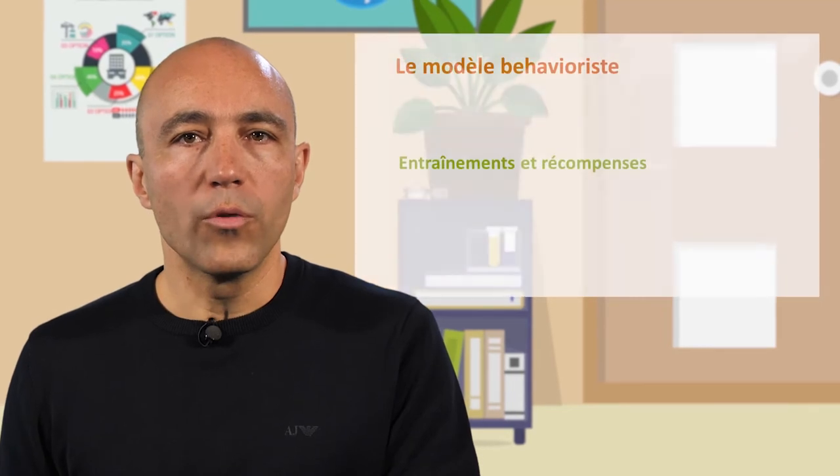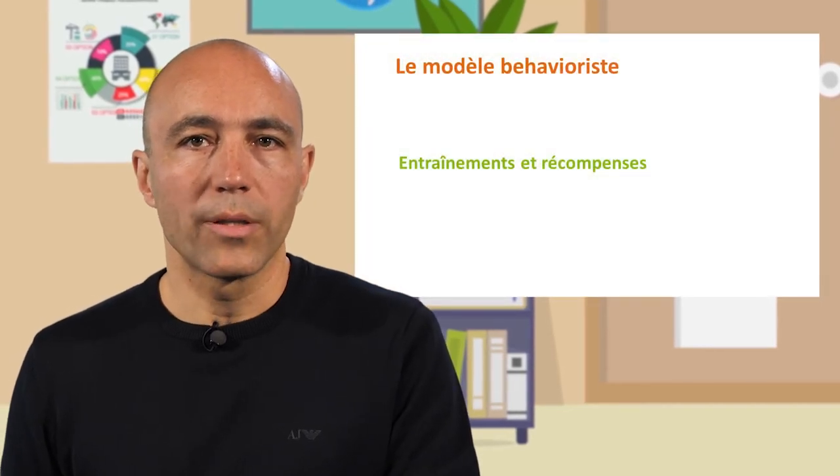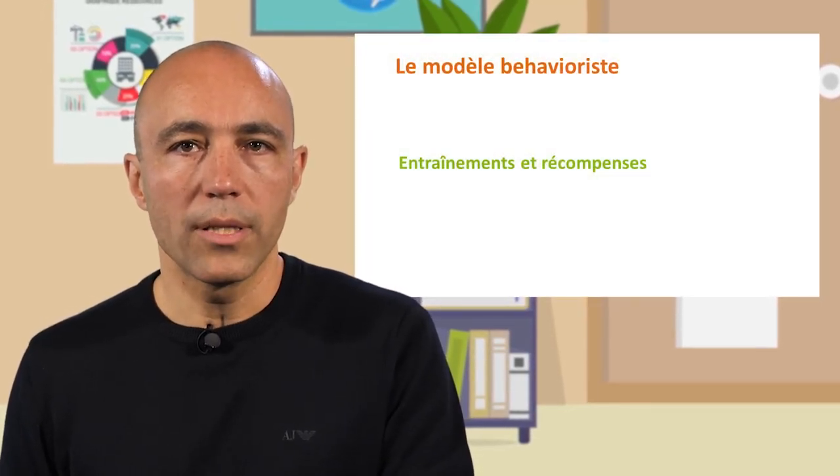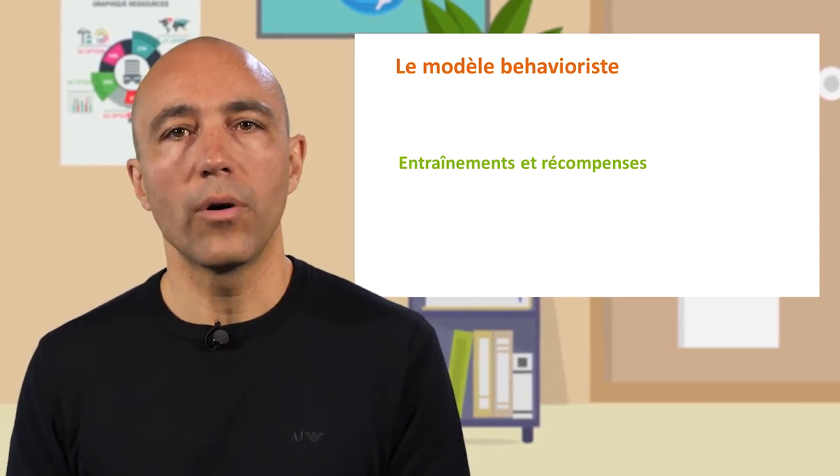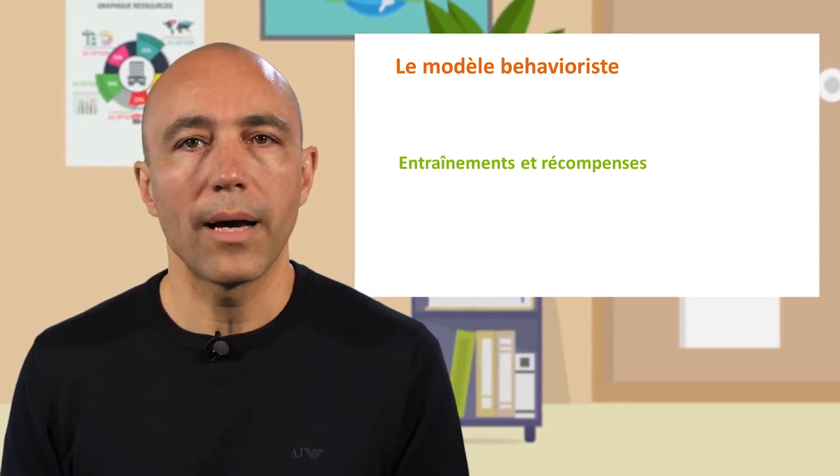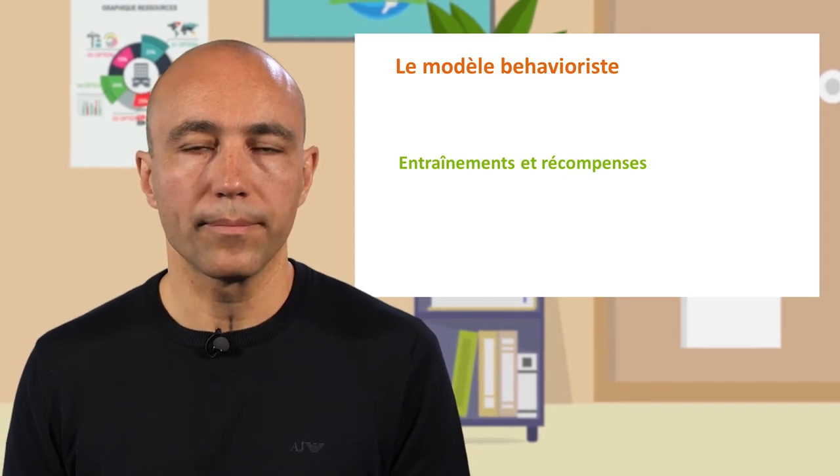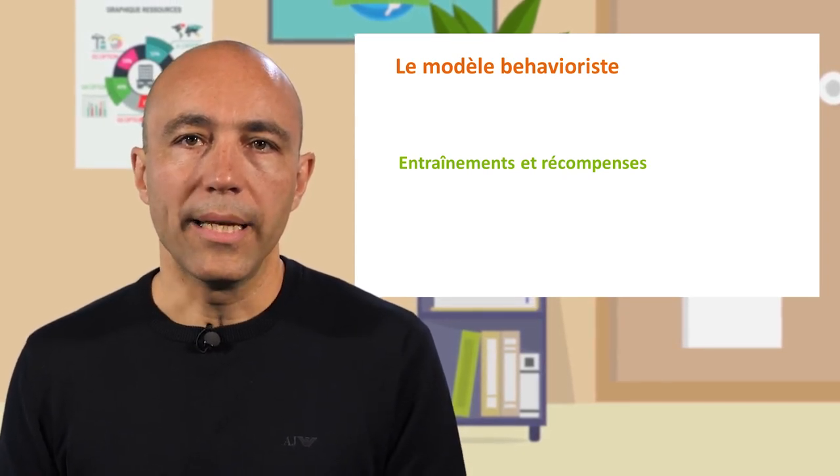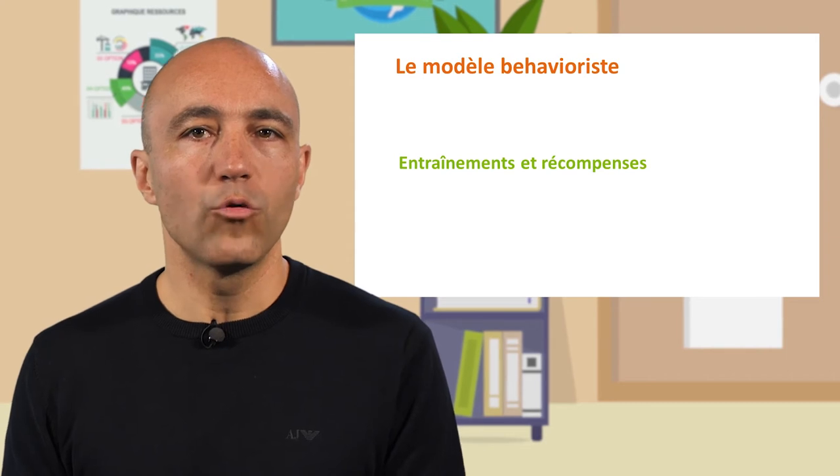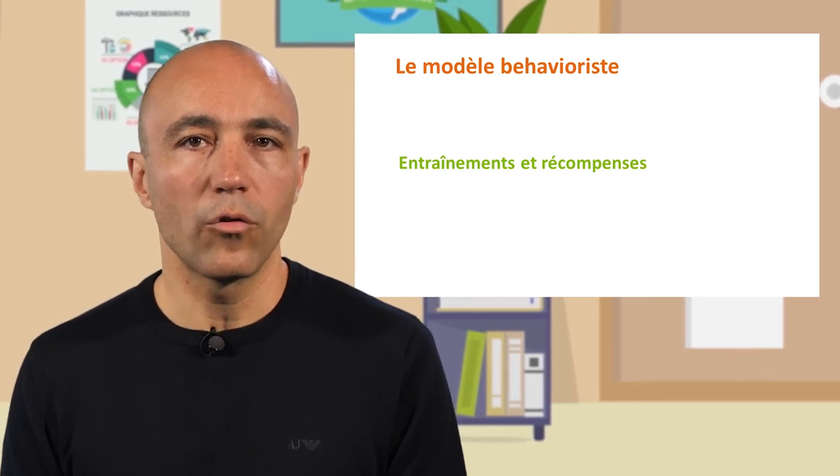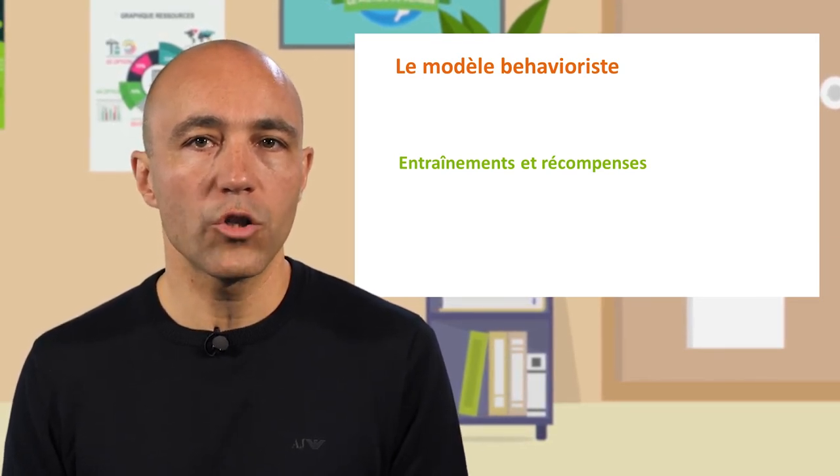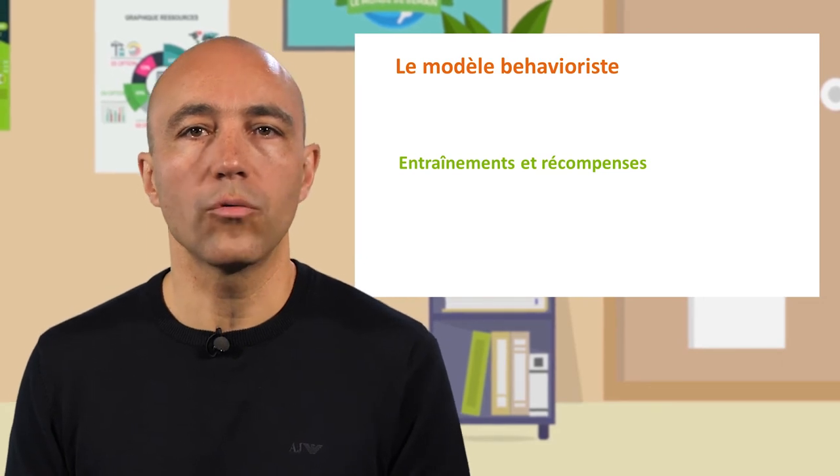Le second modèle prolonge le modèle empiriste. Selon la représentation dite behavioriste de l'apprentissage, on acquiert ces savoirs par des processus d'entraînement et de conditionnement, renforcés par des récompenses et des punitions. Les pédagogies qui en découlent sont celles de la carotte et du bâton. Elles ont montré leurs très fortes limites dans la plupart des apprentissages, sauf peut-être dans l'acquisition de gestes techniques.